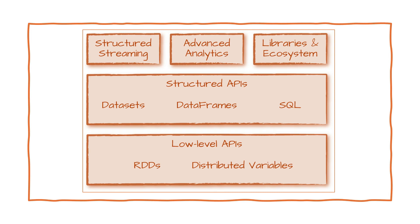First, let's recap the different kinds of structured and low-level APIs that Spark provides. This picture gives an overall summary. Spark has things that enable structured streaming, advanced analytics, and a whole ecosystem of libraries for processing big data. Broadly there are two categories of APIs: high-level or structured APIs, and low-level APIs. Within structured APIs, Spark primarily provides three: Datasets, DataFrames, and SQL. Today we're going to look at DataFrames.